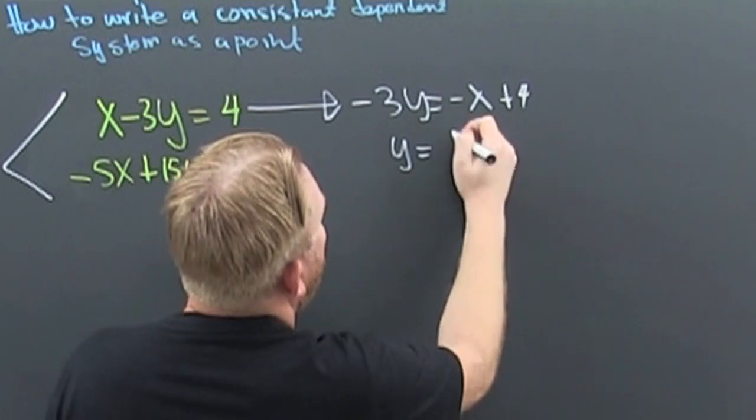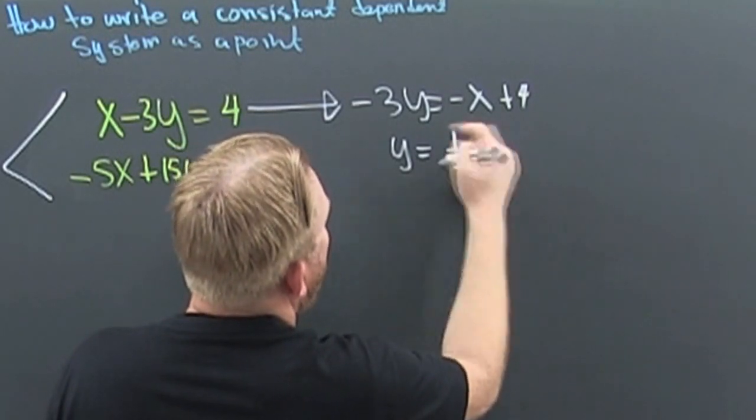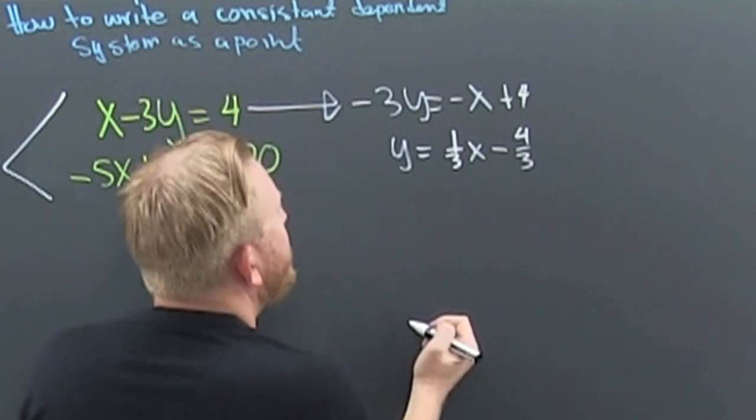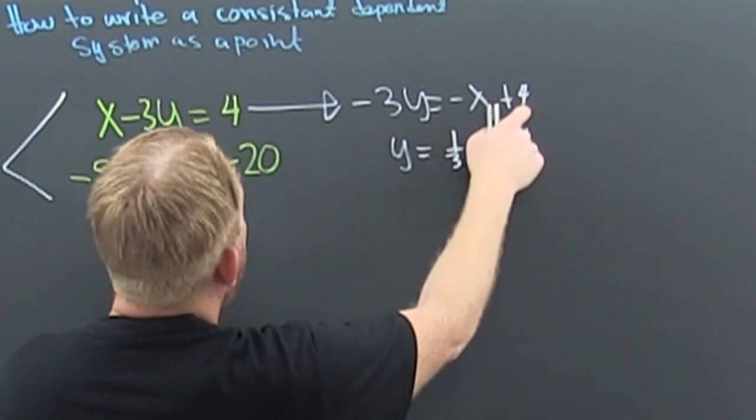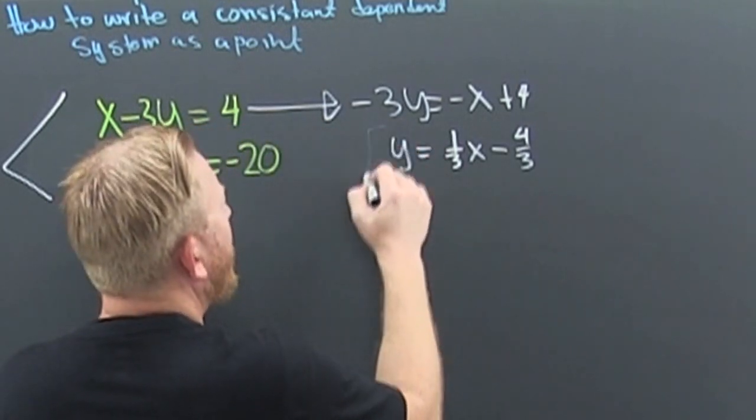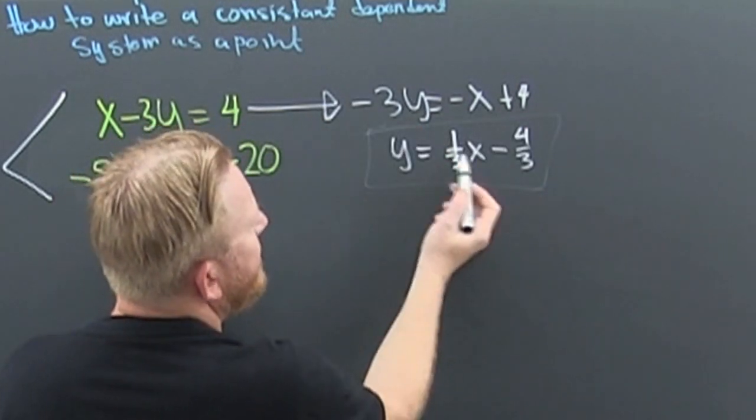So my y is going to be, a minus and minus make plus, one third x and then minus four thirds. Sure, because when I divide by that minus it changes both the signs. Now this is what I was looking for, this is my independent, that's my dependent.